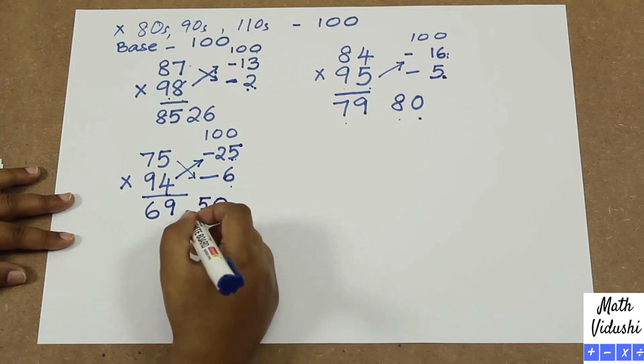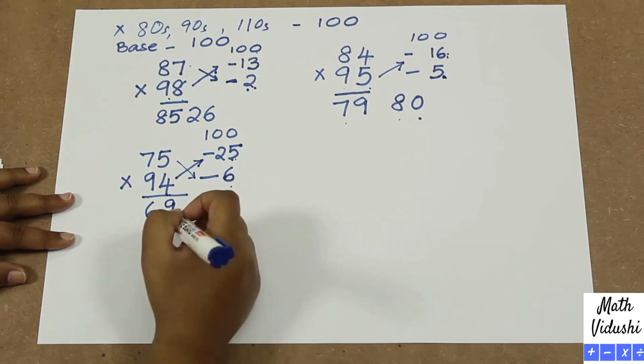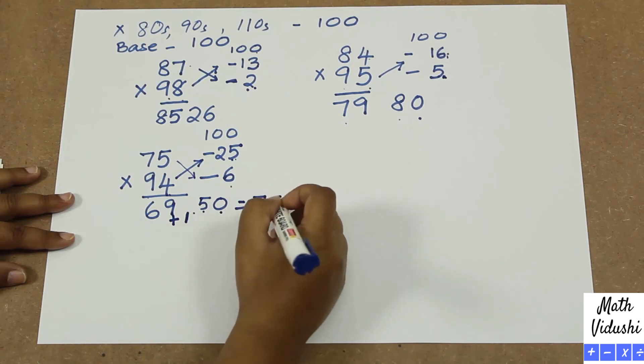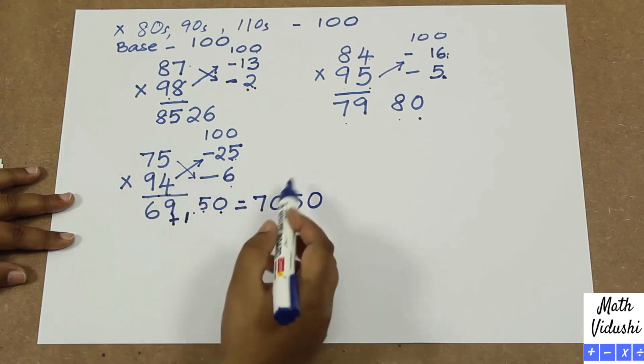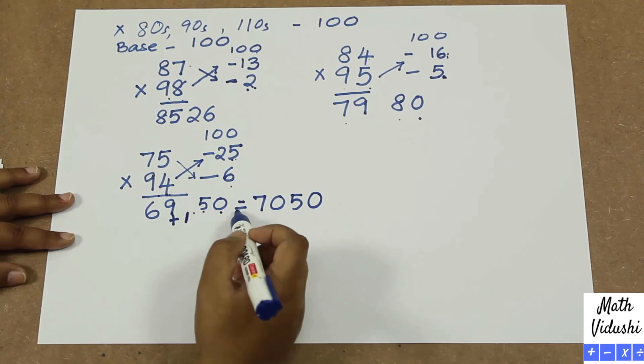But you can accommodate only 2 digits. So what happens to this one? That is a carryover. So you will get 50, and then 69 plus 1. So you will get 7050. So 75 multiplied by 94 will be 7050.